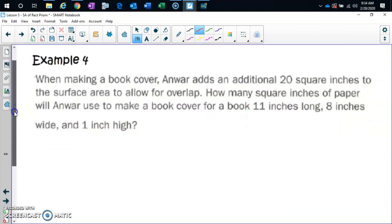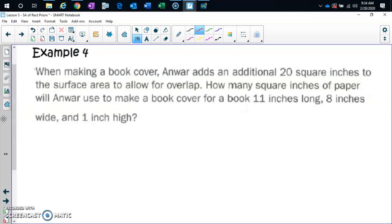Last example. When making a book cover—now this is old school, okay, old days. Anwar wants to add an additional 20 square inches to the surface area to allow for overlap. How many square inches of paper will Anwar use to make a book cover for a book that is 11 inches by 8 inches by 1 inch? So I'm going to draw a book. Isn't a book a rectangular prism? A fat book. So I'm going to call this length, width, height. It does not matter which one you call what, but as long as you put them in the formula the correct way.